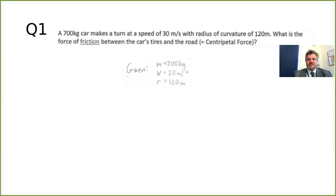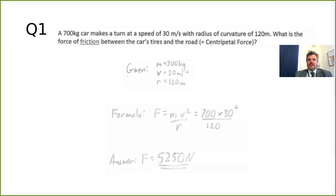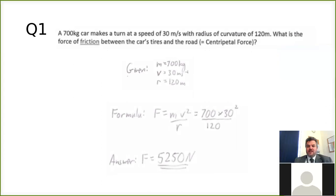So in order to work out centripetal force you've got to think about what you're given. You're given the mass, 700 kilograms. You're given the speed or the tangential velocity, 30 meters per second, and you're given the radius of 120 meters. So the formula you need is force is mass times speed squared over radius. You should be familiar with that one. It is something you're going to need to remember. You then plug in the numbers: 700 times 30 squared divided by 120 gives you an answer of 5,250 newtons.